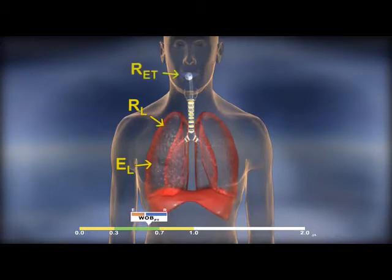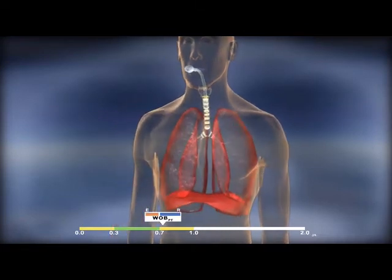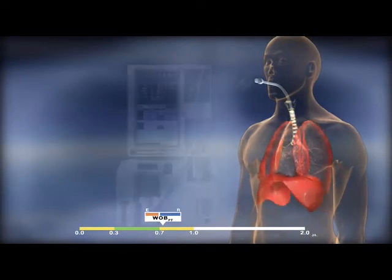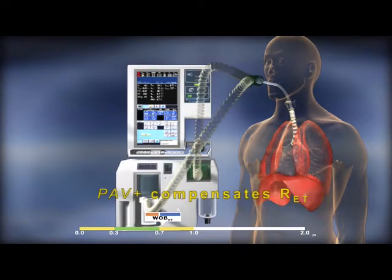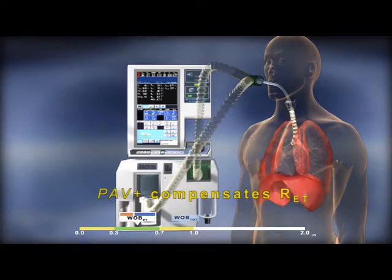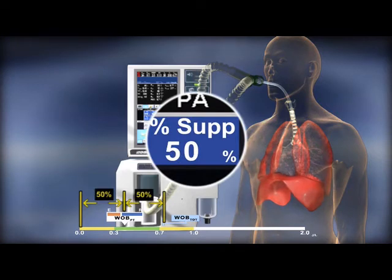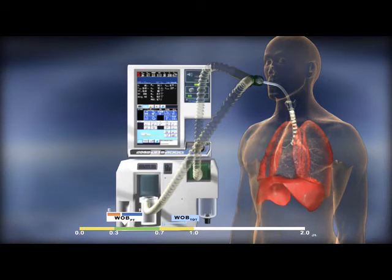Once patients require an invasive artificial airway, there will be an associated increase in the resistance a patient will experience. PAV Plus provides automatic compensation for the increased resistance caused by tracheostomy or endotracheal tubes. The primary setting is percent support, and it can vary from 5% up to 95%. In this example, we have set the percent support at 50%, meaning the patient does 50% of the work and the machine will do 50% of the work. As this support pressure is applied, you can see the patient's work move down into a reasonable level indicated by the green zone.